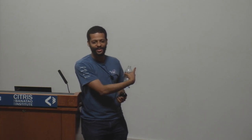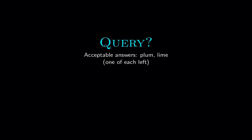Query! Most guesses were wrong. There are actually two fruits still in the basket — one plum and one lime. This illustrates the difficulty of the support find problem.